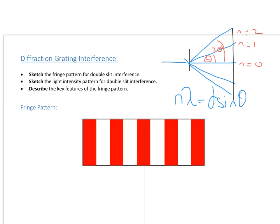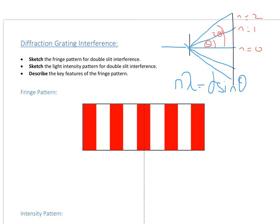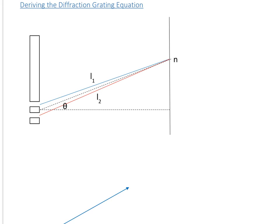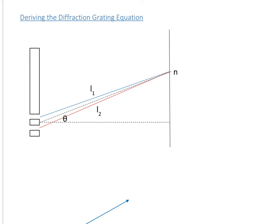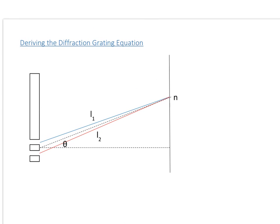Let's look at where the diffraction grating equation comes from, as you need to be able to derive this for the AQA specification. We have a certain maxima being produced, and we know that at a maximum point the path difference must be a multiple of the wavelength — either one, two, three, four wavelengths, etc. So the difference between L2 and L1 is nλ, where n is an integer, because the waves need to be at exactly zero phase difference.